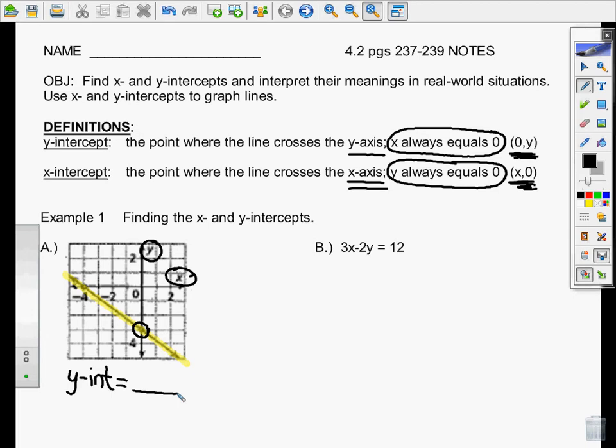All right, so as you count down, here's the origin, and then we're going to count down. There's negative 1, there's negative 2, and voila, there's negative 3. So your y-intercept is negative 3.